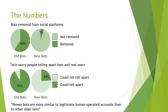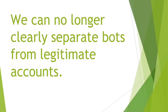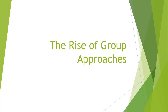Looking at the numbers, only 5% of newer bots are removed from social platforms compared to 60% of older ones. Tech-savvy people tested on identifying social bots could only tell apart newer bots and real users 24% of the time, while the same users spotted older bots 91% of the time. This means we can no longer clearly separate bots from legitimate accounts. Thankfully, this new wave of harder-to-distinguish bots led to the rise of group approaches.